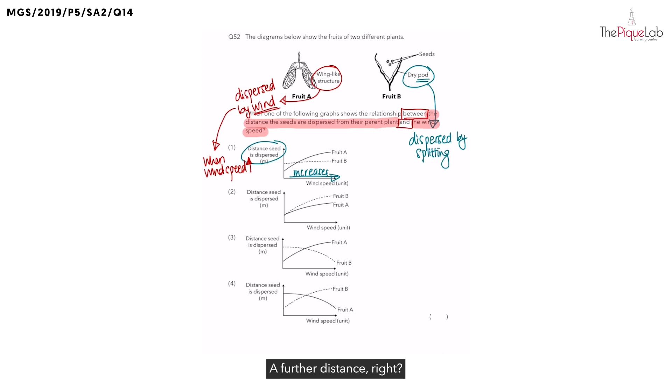A further distance, right? So when wind speed increases, the distance the seed is dispersed would also increase. So for fruit A, you should be looking at a graph where the distance the seed dispersed increases. Increases means going up.